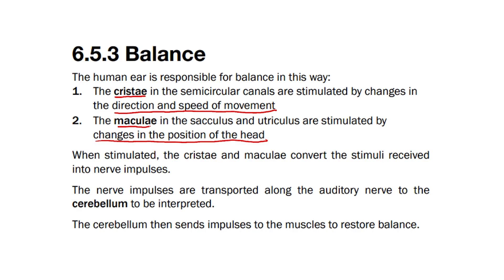Therefore, each receptor is stimulated by two different things. When stimulated, the cristae and maculae convert the stimuli received into a nerve impulse. The nerve impulses are transported along the auditory nerve to the cerebellum, which is the lower part of the brain, to be interpreted.